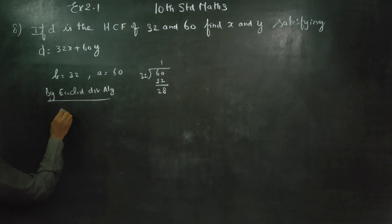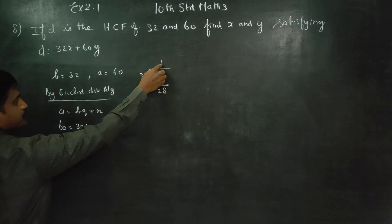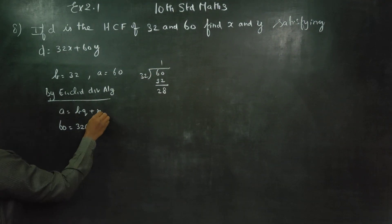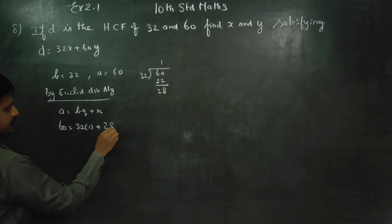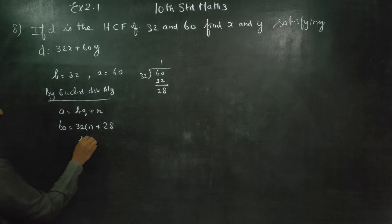A is equal to BQ plus R. A equals 60, B is equal to 32, Q is equal to 1, plus R equals 28. R is not equal to 0.